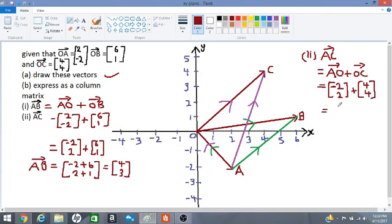Add the numbers on top. The X numbers. So we have -2 plus 4 on top. And then we add the numbers below which is positive 2 plus 4. So our answer is -2 plus 4 is positive 2. And 4 plus 2 is positive 6. So this will give us our AC. AC is equal to 2, 6.